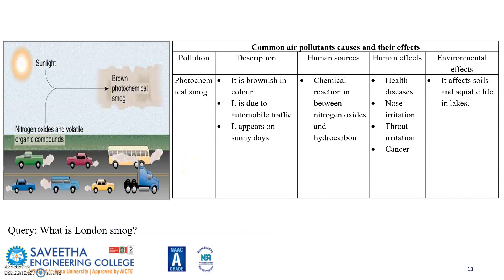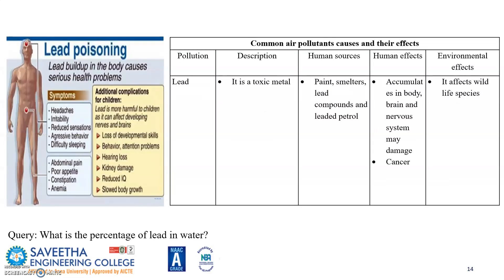Some other common pollutants include photochemical smog. Issues associated with photochemical smog are nose irritation, throat irritation, and cancer. The most toxic material is lead — it accumulates in the brain and nervous system, may cause severe damage to cells, and ultimately leads to cancer. It also affects wildlife.